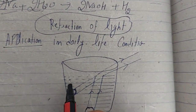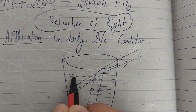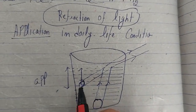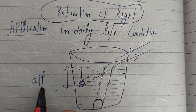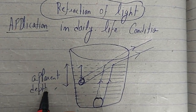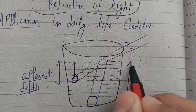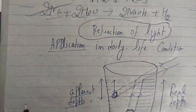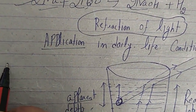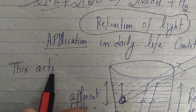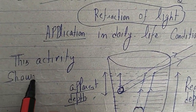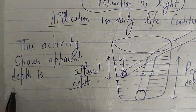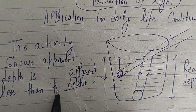From the top surface of water up to the appearing position of the coin — this is the apparent depth. The distance of the appearing position of the coin from the top surface of water is apparent depth. From the top surface down to the real position of the coin is the real depth. This activity shows that apparent depth is less than the real depth.